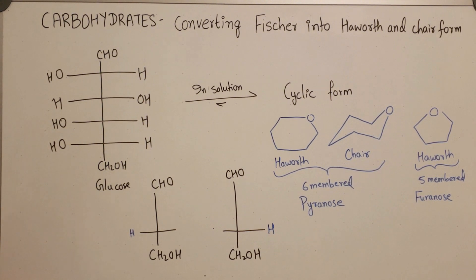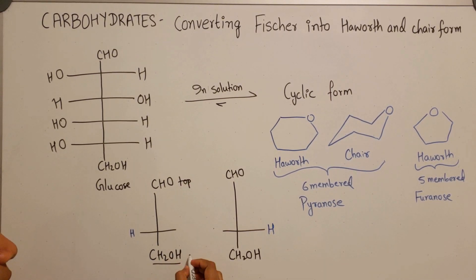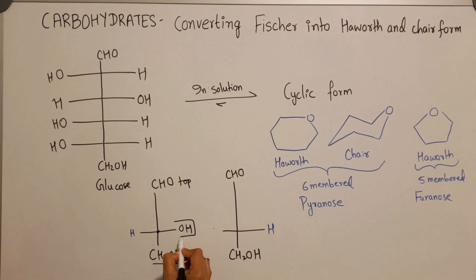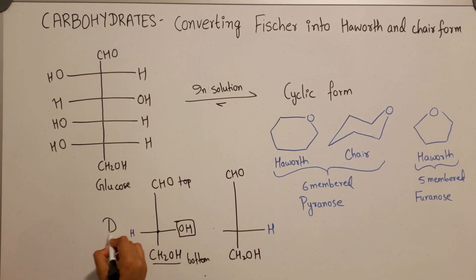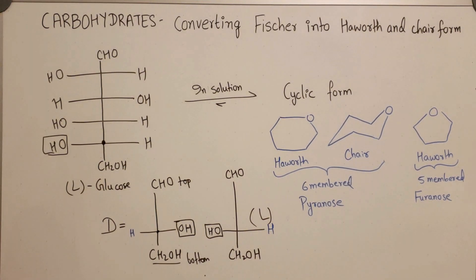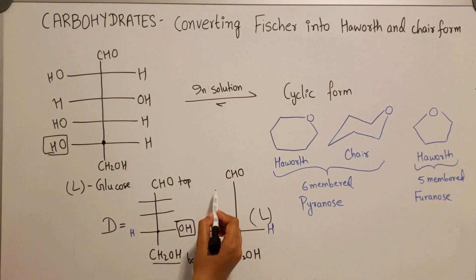To determine if a carbohydrate sugar is D or L, you should look at the Fischer projection with the aldehyde on top and the CH2OH group at the bottom. Look at the stereogenic carbon right above this last group — if the hydroxy group is on the right-hand side, it is a D sugar; if on the left, it is an L sugar. It doesn't matter how many stereogenic centers are between this last group and the aldehyde.